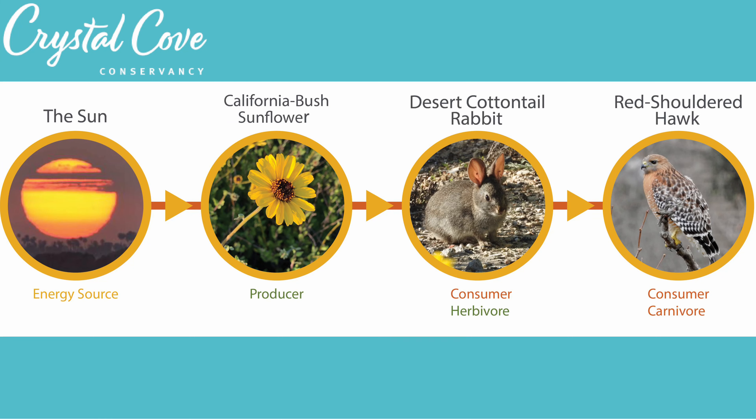Now that we know how each organism in our buckwheat plant gets its energy, let's try to visualize these organisms and their relationships in what we call a food web. You may have heard of a food web before, or maybe a food chain. A food chain is a series of events in which one organism consumes another and obtains energy. This is an example of a food chain here in Crystal Cove, and as you can see it is in a sequential order, with lines connecting each organism representing who is eating who in this ecosystem.